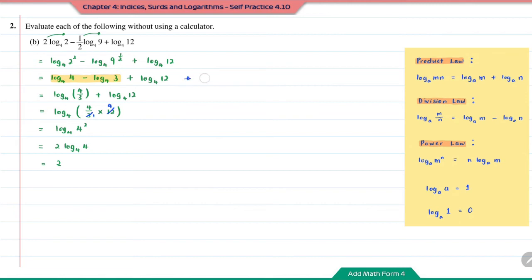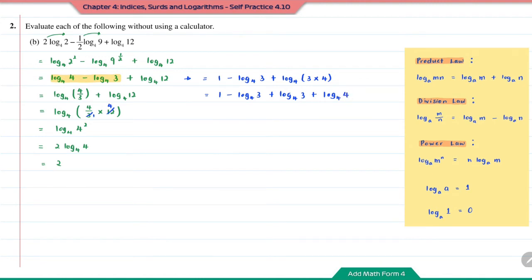Another option: from here, convert log base 4 of 4 into 1 directly. So it's 1 minus log base 4 of 3 plus log base 4 of 12. Writing 12 as 3 times 4 and applying the product law gives log base 4 of 3 plus log base 4 of 4. The negative log base 4 of 3 and positive log base 4 of 3 cancel out. Log base 4 of 4 equals 1, so it's 1 plus 1, which is also equal to 2.